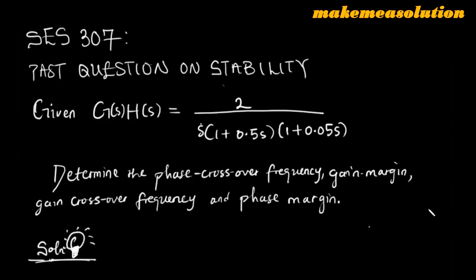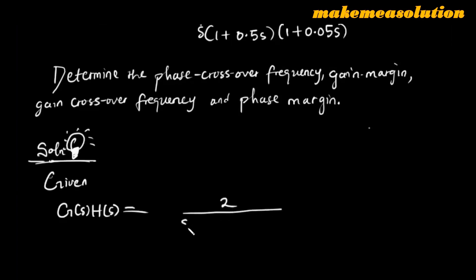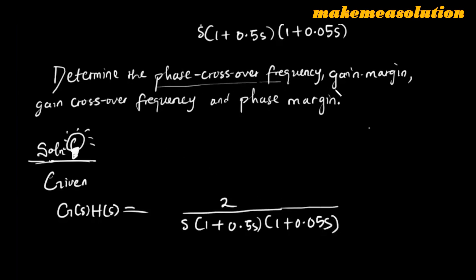We are asked to determine the phase crossover frequency, the gain margin, the gain crossover frequency, and the phase margin. In this video we are going to build on knowledge from the previous video, but I'll also make it possible to understand even without relying on it. Our given G(s)H(s) is 2 divided by s into 1 plus 0.5s then 1 plus 0.05s.